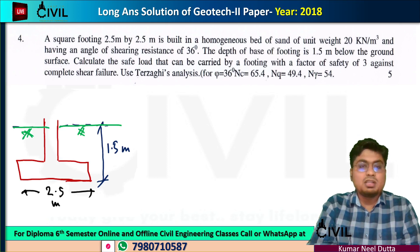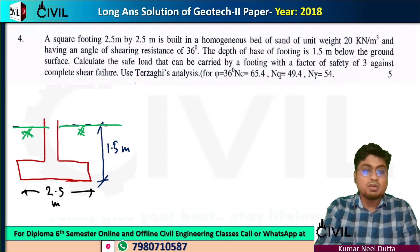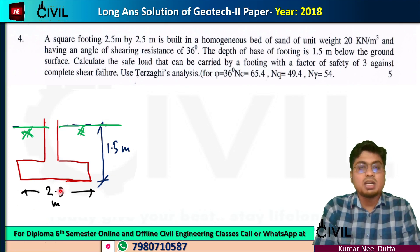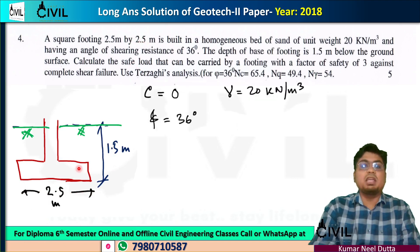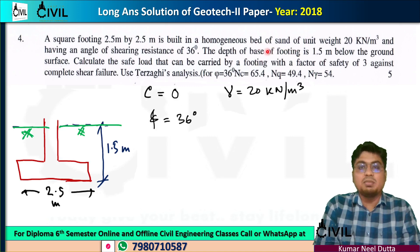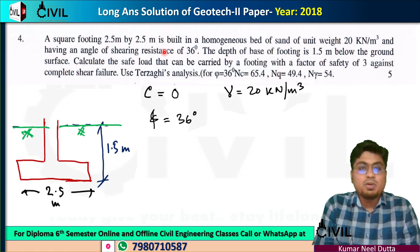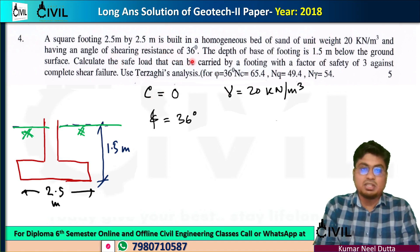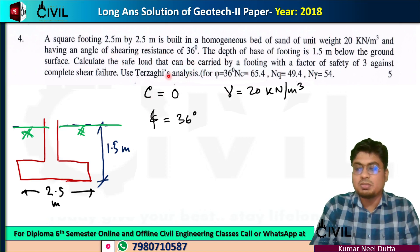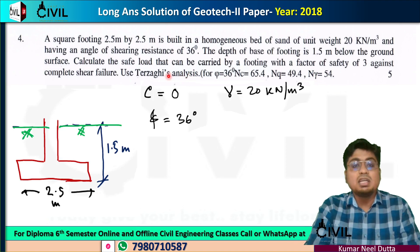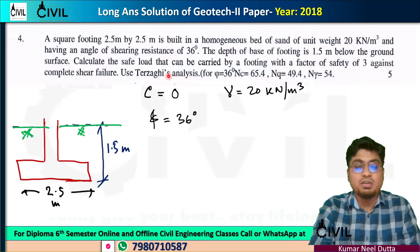If you look at the ground level, it's about the width. The width is given. The cohesion C value is 0. Gamma is the unit weight, and the angle of shearing resistance is 36 degrees. Since 36 degrees is greater than 28 degrees, this is a case of general shear failure.